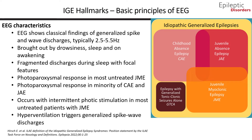Before we go over the various subtypes of IGE, we will go over some EEG characteristics. The EEG classically shows generalized spike-wave discharges, typically 2.5 to 5.5 Hz. These discharges are brought out by drowsiness, sleep, and on awakening. During sleep, discharges can be fragmented with focal features. In untreated JME patients there can be a photoparoxysmal response, as well as in a minority of CAE and JAE patients. Discharges can occur with intermittent photic stimulation in most untreated JME patients. Hyperventilation can also trigger generalized spike-wave discharges.